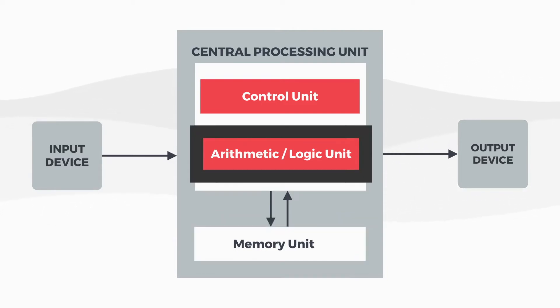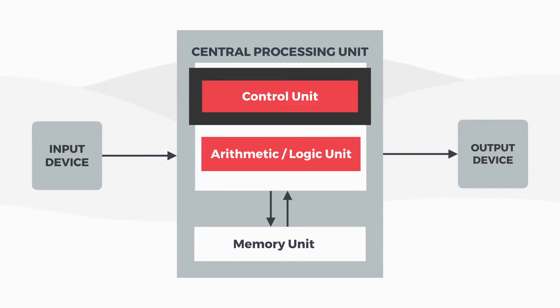The arithmetic logic unit is in charge of the basic data operations the microcontroller can perform. For example, it could be as simple as adding two numbers or determining whether a specific microcontroller input is receiving voltage. A control unit is a group of circuits responsible for reading instructions from memory and allocating them to the appropriate microcontroller components based on the content of the instruction.